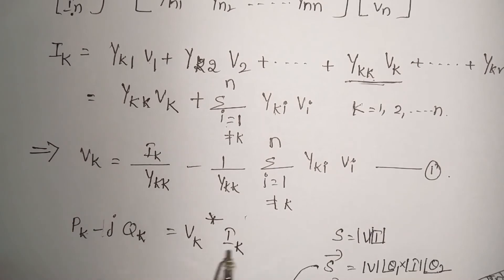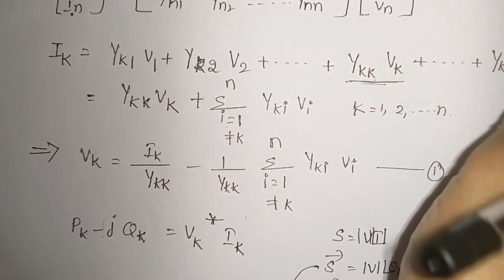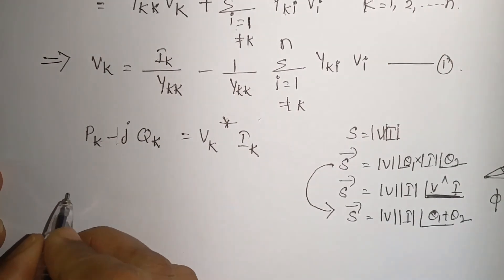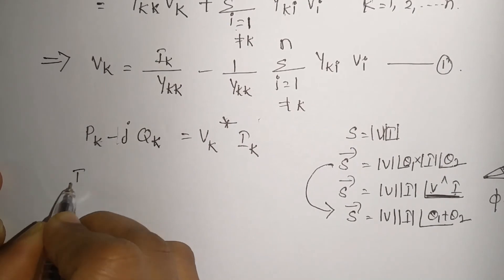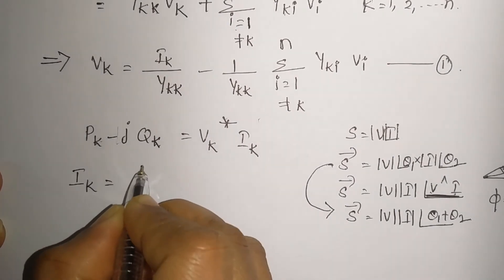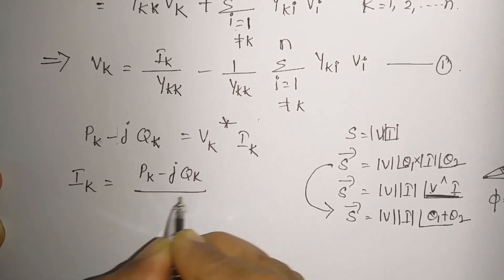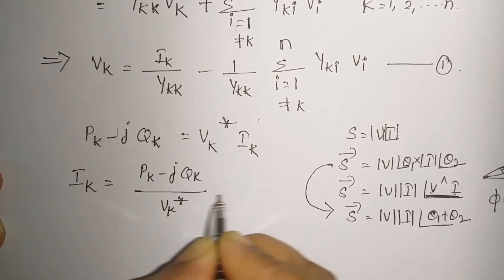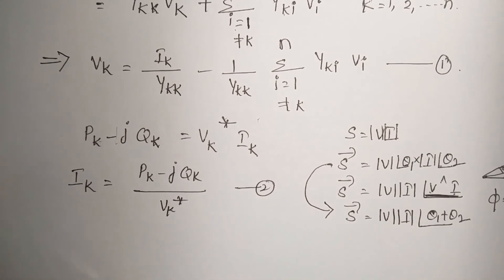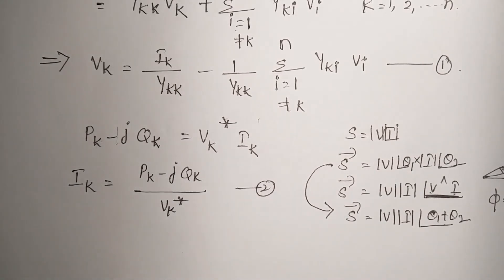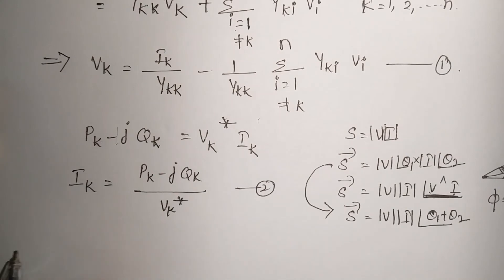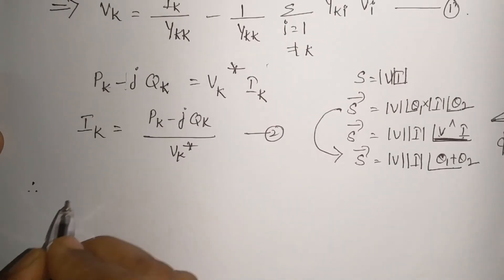From this relation, I would like to relate Ik. What is Ik from this equation? This is Pk minus jQk by Vk conjugate. Call it as equation 2. So I hope so far you have understood. Now what you do, you substitute this equation 2 in equation 1.